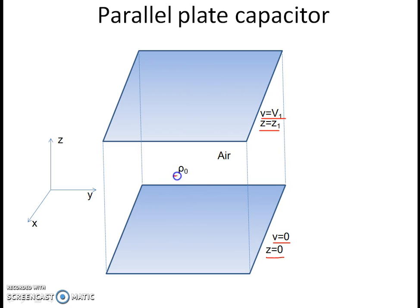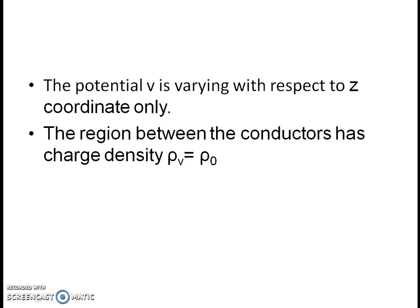The region between the two plates has a volume charge density given by rho naught, which is a constant in this problem. The potential is not varying with respect to the x or y directions — it is varying only in the z direction, from V equals zero at z equals zero to V equals V1 at z equals z1. The charge density in the region is given by rho_V equals rho naught.